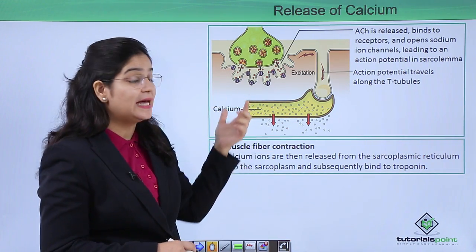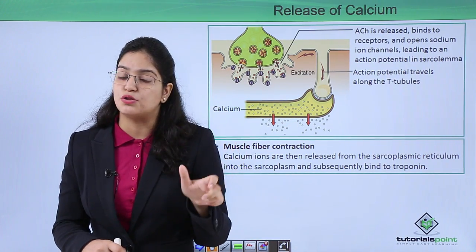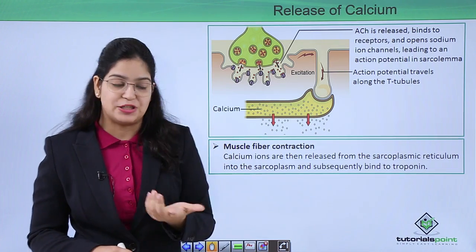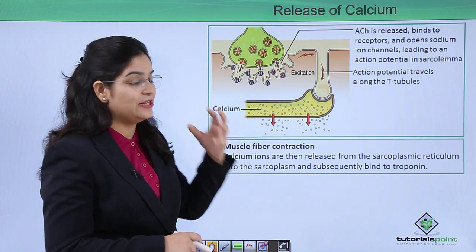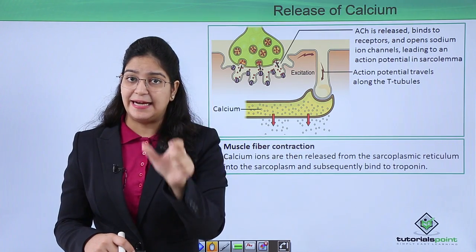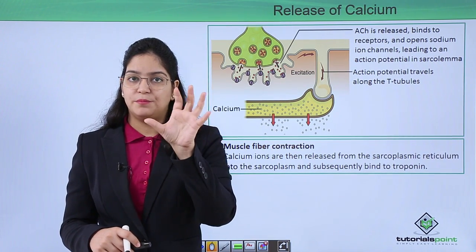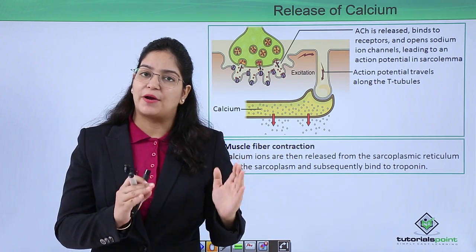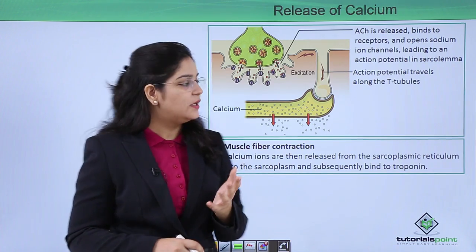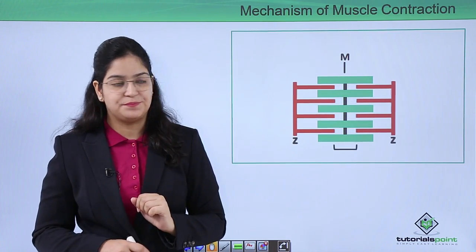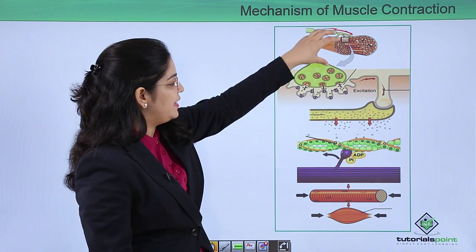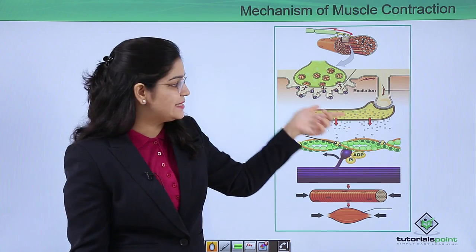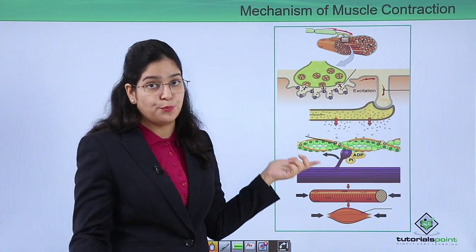When the impulse comes to the sarcoplasm, it then travels to the sarcoplasmic reticulum, which is the storehouse of calcium. When the impulse reaches this storehouse, calcium is released. The calcium then moves to the binding site, where the binding site was previously blocked. Calcium removes that block and starts the process of muscle contraction.